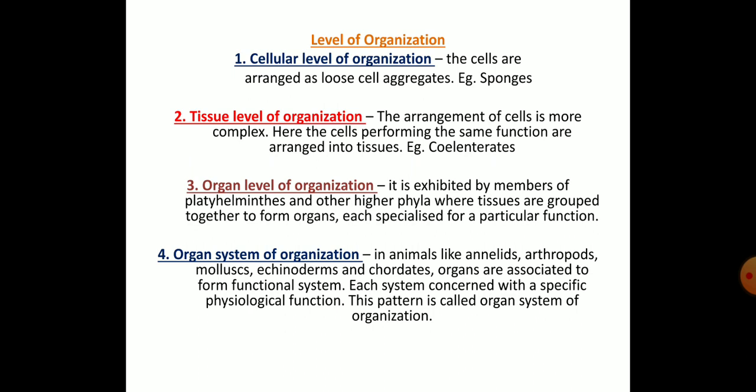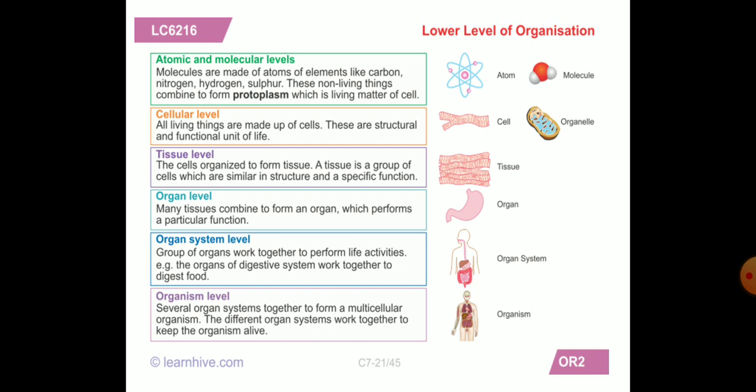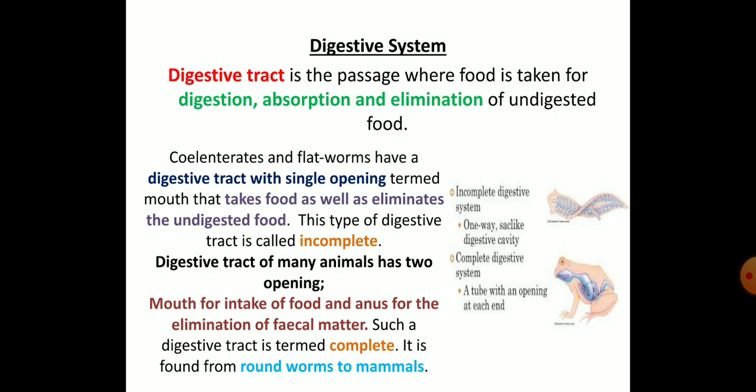At the organ system level, organs combine to form an organ system — for example, lungs belong to the respiratory system and the heart belongs to the circulatory system. Larger animals like Annelida, Arthropoda, Mollusca, Echinodermata, and chordates (vertebrates) show this level. Each system is concerned with a specific physiological function. This is how our body is organized from atom to protoplasm, cellular level, tissues, organ, organ system, and organism level.